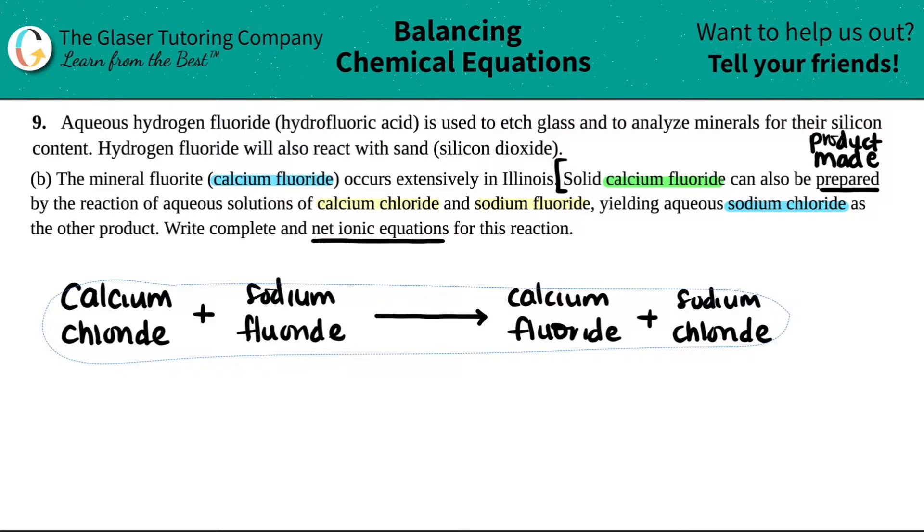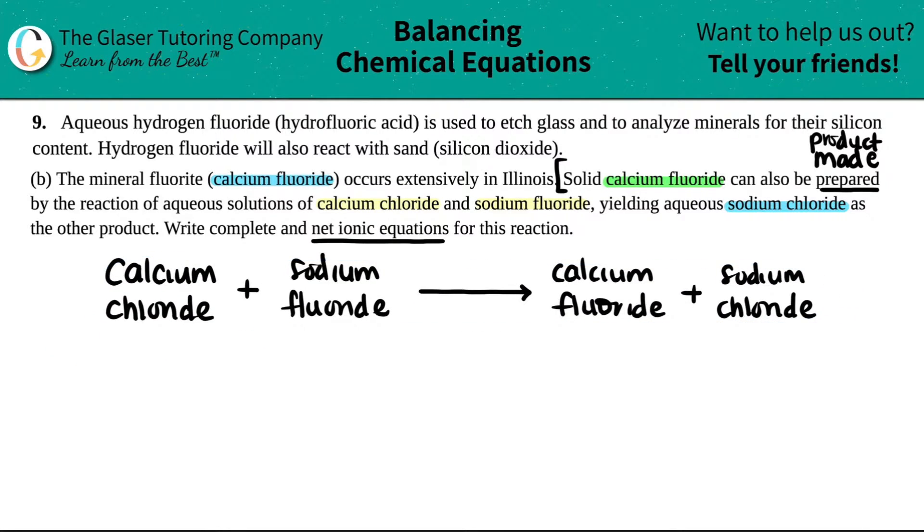So let's just start writing it out. So I know that we have calcium chloride is going to be reacting with sodium fluoride. The reaction of those two guys will yield - remember, the yield is just telling you what you will produce. So that's the arrow sign. We're going to yield the product that they're talking about, calcium fluoride and the other product, which was sodium chloride.